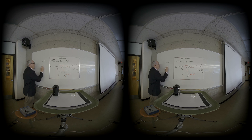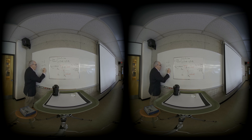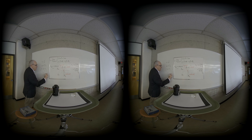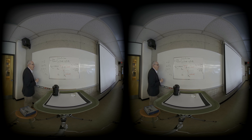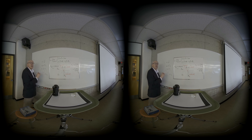The speed of light or any wave is given by its frequency times its wavelength. The wavelength is the distance between peaks, and the frequency is the number of cycles per second. The frequency does not change as you enter materials or change in materials, but the wavelength actually does.